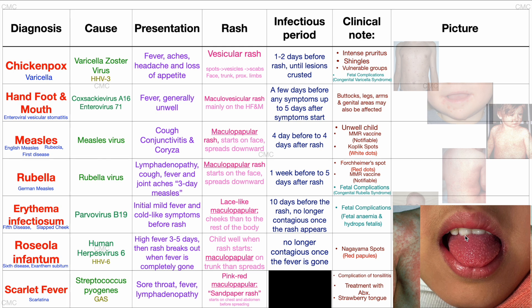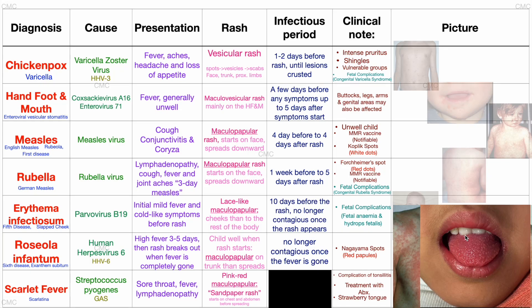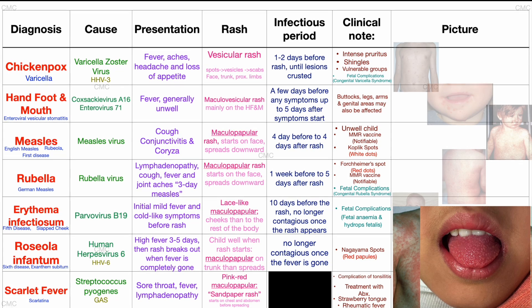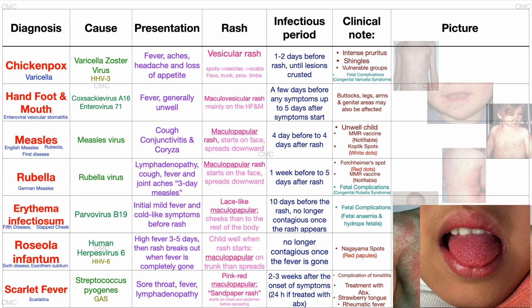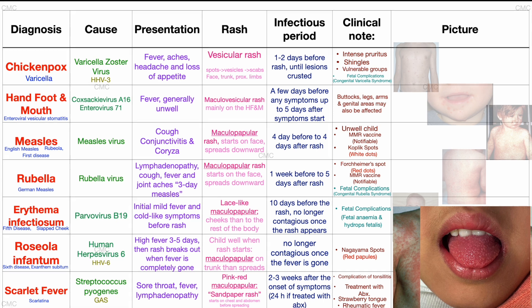With the discovery of antibiotics, the complications of acute tonsillitis such as scarlet fever, and even the more severe complications such as rheumatic fever, are now quite rare. But without antibiotic treatment, the child will be infectious for up to two to three weeks from the onset of symptoms, and with antibiotics only for 24 hours.